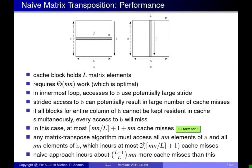Effectively, the best we can hope for — ignoring alignment — is 2MN/L cache misses, corresponding to bringing the cache blocks for each of the MN elements in both arrays A and B into the cache once and only once. But the naive algorithm achieves far more than this, so it is very suboptimal. We can do better, and that's what we want to look at next.